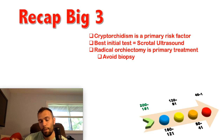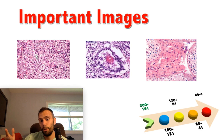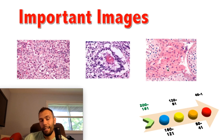Key images to remember: the fried egg appearance with prominent nucleolus and clear cytoplasm for seminomas; Schiller-Duval bodies classic for yolk sac tumors; and Reinke crystalloid structures in Leydig cell tumors, which are the sex cord stromal tumors.